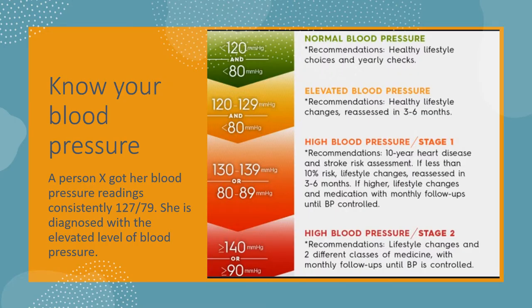Let's start with the example of blood pressure. A person X got her blood pressure readings consistently 127/79. She is diagnosed by the doctors with an elevated level of blood pressure. Now here you can see the ranges given — these are the criteria that serve to interpret the level of blood pressure.